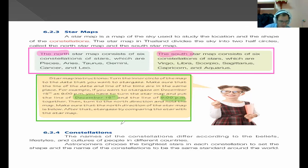What is a constellation? The names of the constellations differ according to their beliefs, lifestyles and cultures of people in different countries. Astronomers choose the brightest stars in each constellation to set the shape and the name of the constellations to be the same standard around the world. So if there's a new star that is seen, everyone in the world uses the same way of identifying and naming it so that there's no confusion.